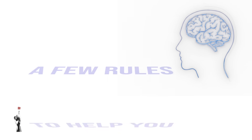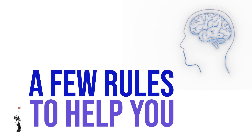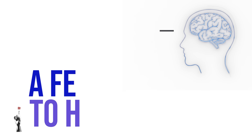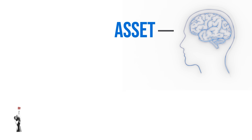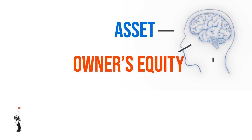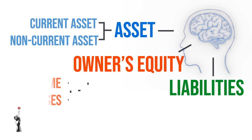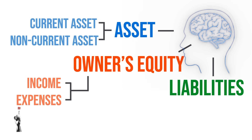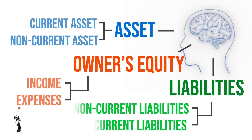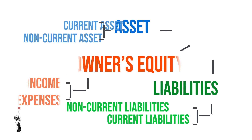As you already know, accounting is a subject that you need to understand rather than learning the theory by heart. But the following rules or principles are very important. You should know what an asset, owner's equity, and liabilities are, and you should know the different types of assets, income, expenses, and liabilities. Let's look at this table very quickly.